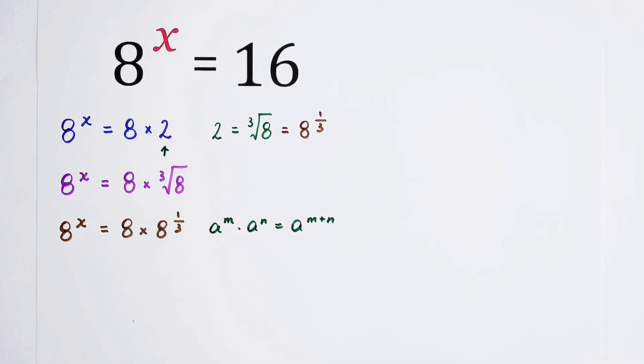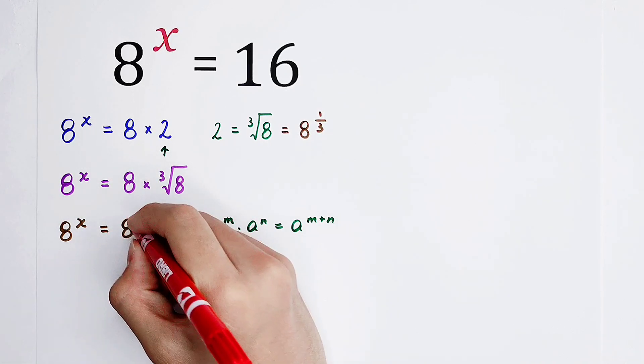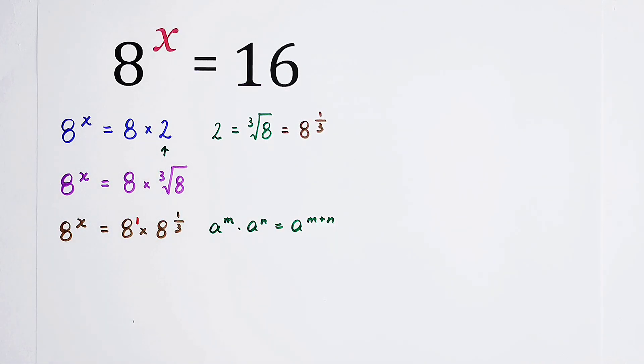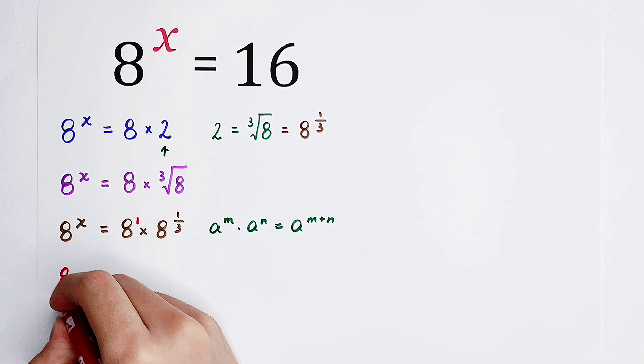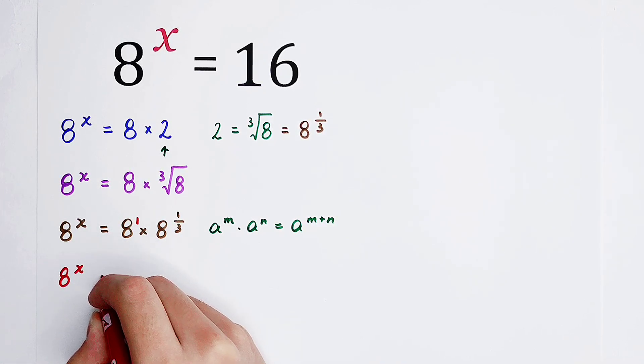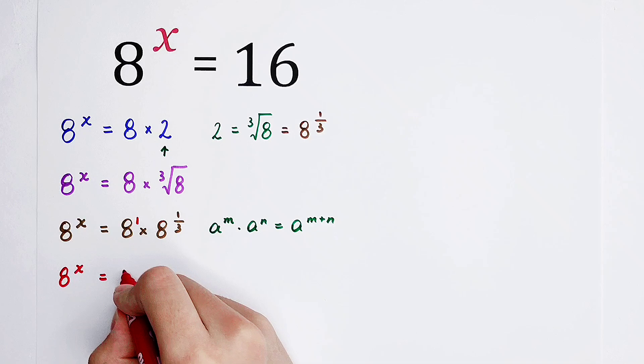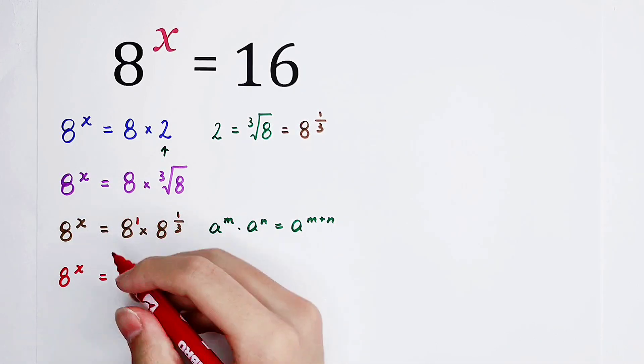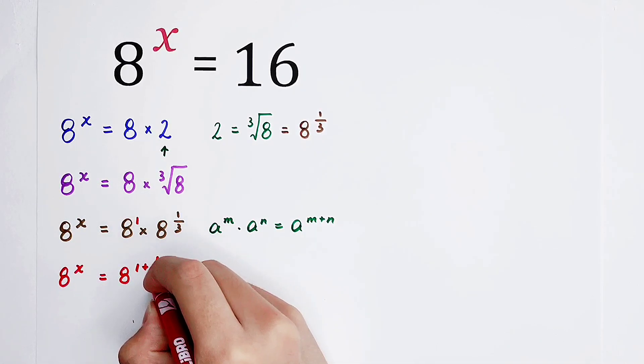So here, a is 8. This 8 can be regarded as 8 to the power of 1. So now, the left-hand side is still 8 to the power of x, and the right-hand side can be written as 8 to the power of m plus n, which is 1 plus 1 over 3.